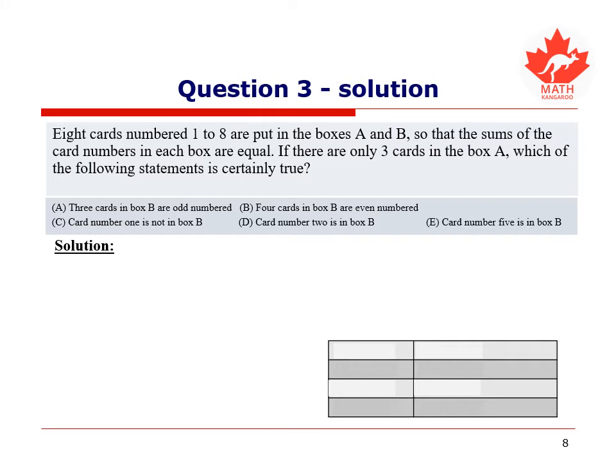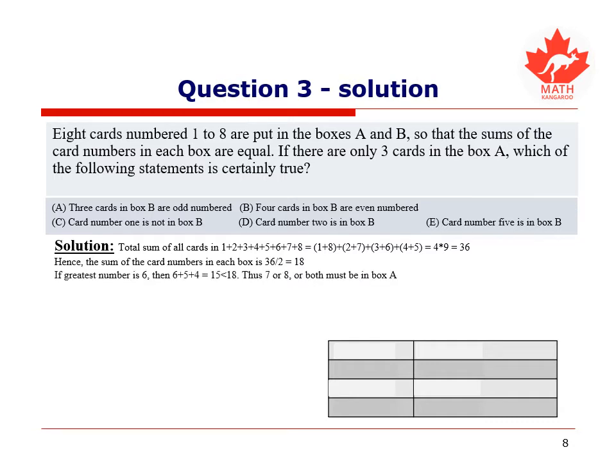To help find the solution to this question, we have to find the total sum of all card numbers, to which add and roll up gives us 36. Hence, the sum of the card numbers in each box is 36 divided by 2, or 18. Let us determine which three cards have a sum equal to 18. There are several possibilities and we should make sure we find them all. If we assume the greatest number in the triple is 6, then the greatest possible sum is 6 plus 5 plus 4 which is equal to 15. But, 15 is less than 18. Therefore, either 7 or 8 or both must be included in the triples.